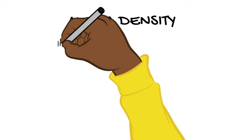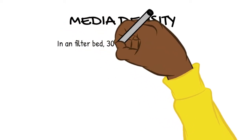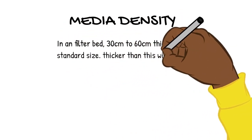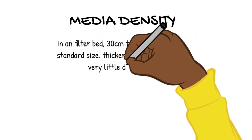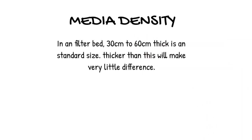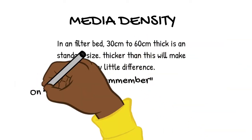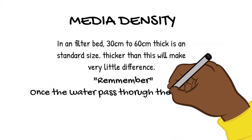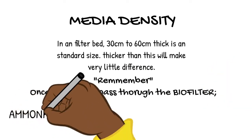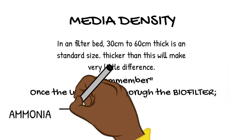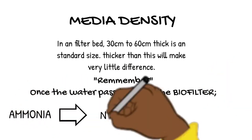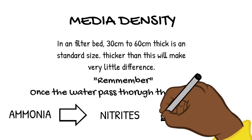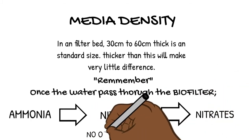Regarding media density: a filter bed 30 to 60 centimeters thick is the standard size. Thicker than this will make very little difference. Remember, once water passes through the biofilter, ammonia will be converted to nitrites and then to nitrates — there is no other way.